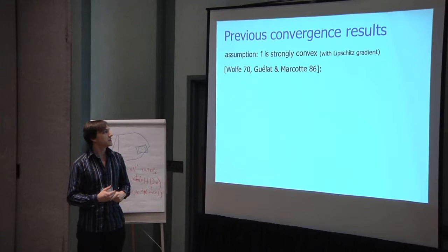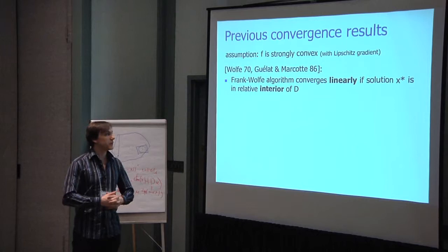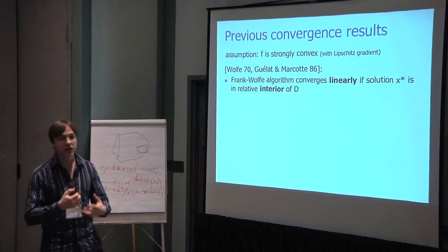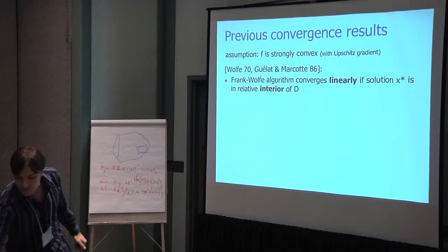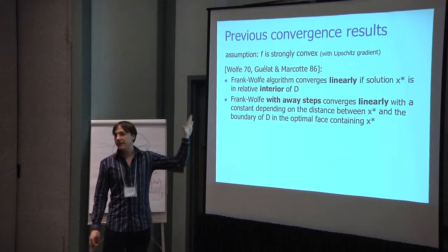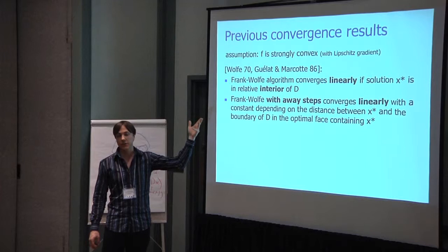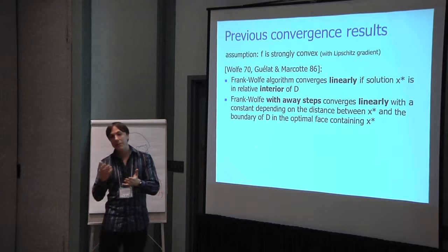What are the known convergence results? As Fred mentioned, if f is strongly convex, there is this result by Guélat and Marcotte. Frank-Wolfe algorithm will converge linearly only if the solution is in the interior of the domain. In particular, the constant of convergence will depend on the distance between the solution and the boundary. This is kind of annoying because this constant could be arbitrarily close to zero. Now if you look at Frank-Wolfe with the away steps, you won't have to have that the solution lies in the interior of the domain.